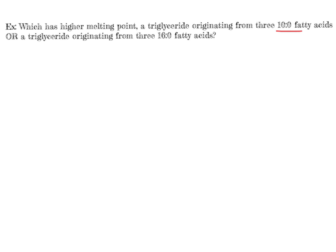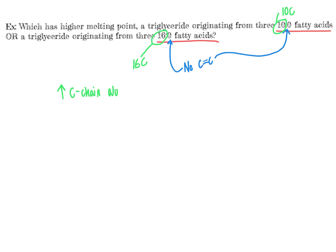In this second problem, we apply our skills in evaluating intermolecular interactions and melting points one more time. We are asked which has a higher melting point: a triglyceride built from three 10:0 fatty acids, or one built from three 16:0 fatty acids. In this case, the extent of saturation is the same — both are colon-zero fatty acids with no carbon-carbon double bonds. So the alternative criterion is the number of carbon atoms: 16 versus 10. Thinking back to van der Waals forces, as carbon chain length increases, van der Waals intermolecular interactions increase.